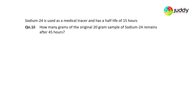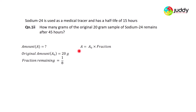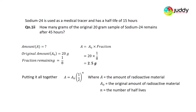Question 1.2: how many grams of the original 20-gram sample of Sodium-24 remain after 45 hours? The original amount is 20 grams and the fraction remaining is one-eighth, so: amount = original amount × fraction remaining = 20 × (1/8) = 2.5 grams. We can do this all in one step using the equation: amount = 20 × (½)^3, which gives 2.5 grams.